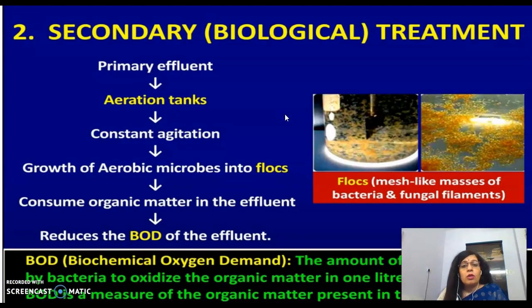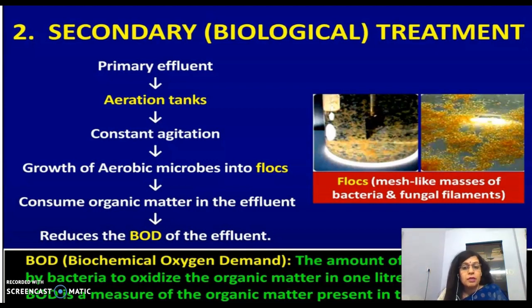The second treatment is biological treatment. The primary effluent is passed into aeration tanks where constant agitation is used. This promotes the growth of aerobic microbes into flocs — mesh-like masses of bacteria and fungi.